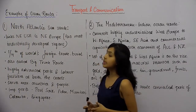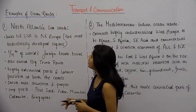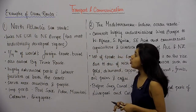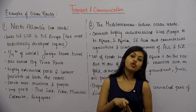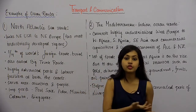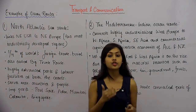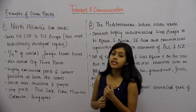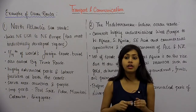Let's start looking at a few examples of ocean routes in this chapter. The first one is the North Atlantic Sea Route. The Atlantic Ocean is the one between the continent of America and Europe. So this is the North Atlantic Sea Route, situated exactly over there.